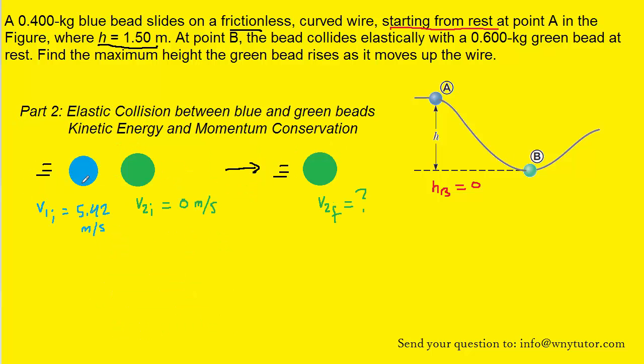In part two, we're going to have the elastic collision between the blue bead and the green bead, which is initially at rest. Now because the collision is elastic, we know that both kinetic energy and momentum are conserved. Now it does turn out that there's a special shortcut in this situation, and the reason the shortcut applies is for the following reasons.